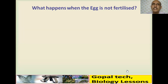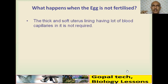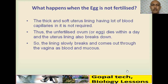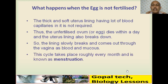If the egg is fertilized, it develops into a zygote, then implantation occurs, then an embryo, then a fetus, and finally the birth of a baby. But what happens when the egg is not fertilized? The thick soft uterus lining, with many blood capillaries, is no longer required. The unfertilized ovum dies within a day and the uterus lining breaks down, coming out through the vagina as blood and mucus. This cycle occurs roughly every month and is known as the menstrual cycle.